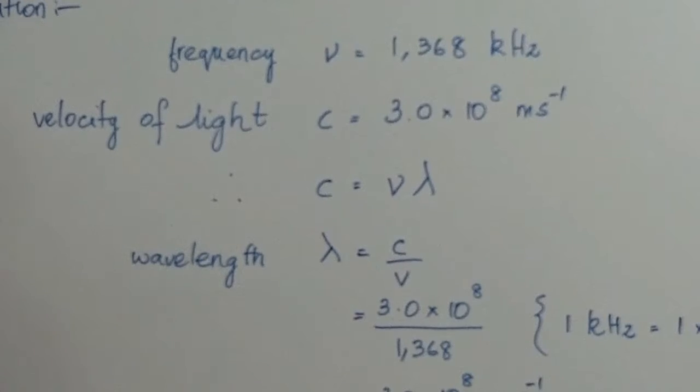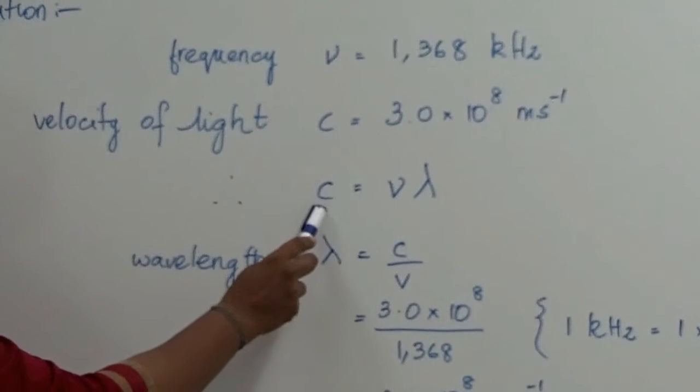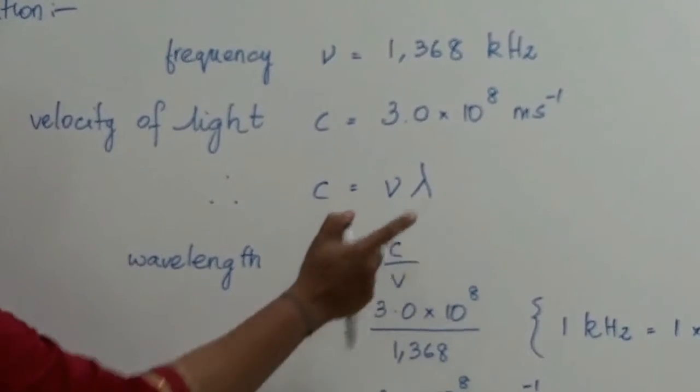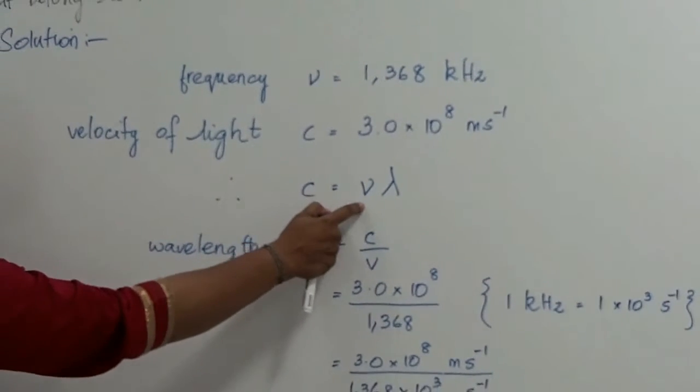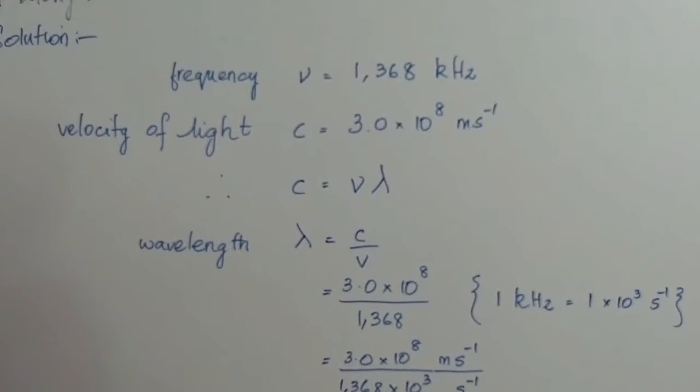Then, the formula for finding out the velocity of light, C is equal to frequency into wavelength. Here, C is the velocity of light, V is the frequency of the wave, and lambda is the wavelength of the wave.